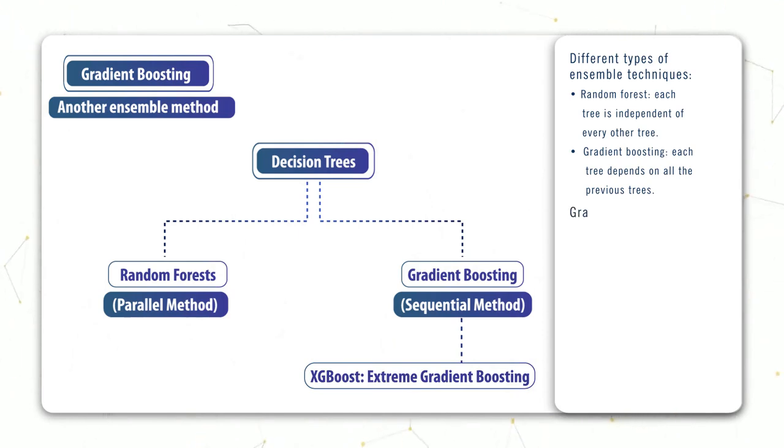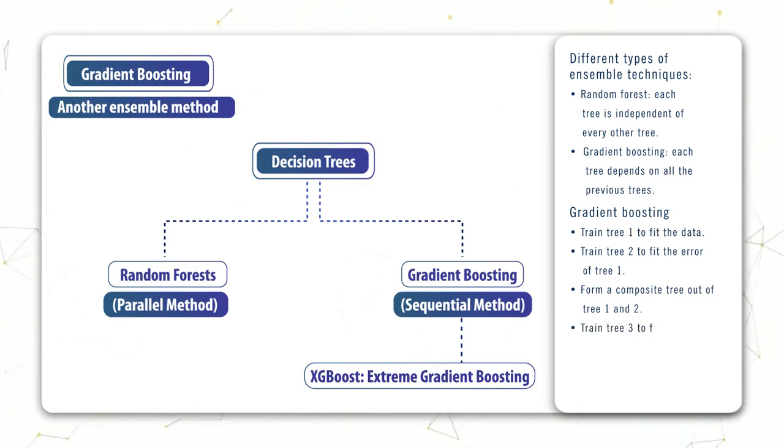So here's the gist behind gradient boosting. We start by training a simple tree on the dataset. Next we calculate the error of the tree's prediction, also known as a residual. We then train a new tree to fit the error and add this new tree to the original model.